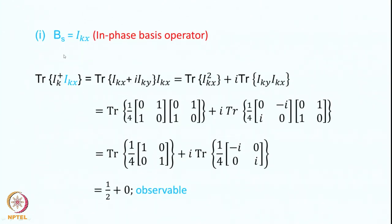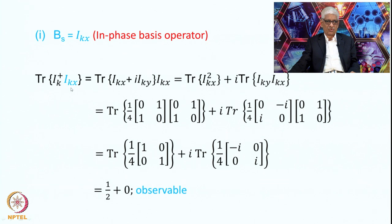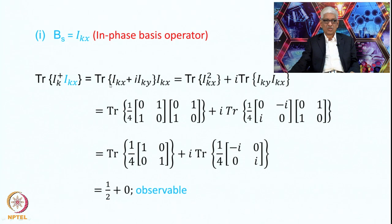Let us take a few examples. First, consider Bs equal to IKx — the in-phase basis operator. We calculate trace(IK+ · IKx). Writing IK+ as IKx + i·IKy, and multiplying, the first term gives trace(IKx²) and the second term gives i·trace(IKy · IKx). Now, since both are operators of the same spin, we use the individual spin operator matrices. IKx is ½ times the matrix [0,1;1,0], so IKx² gives ¼ times [1,0;0,1], and we need to evaluate the trace.